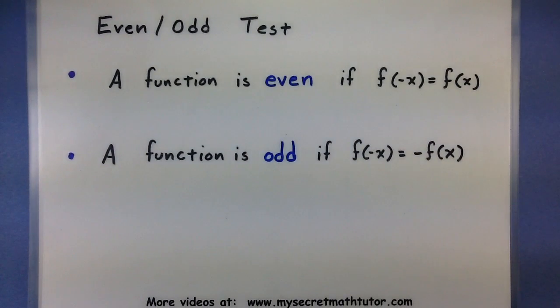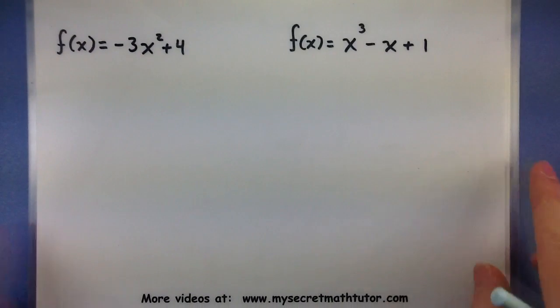So when we have the equation of a function, we want to substitute in a negative x, simplify it as much as possible to see if it satisfies one of these conditions. Let's grab some examples and give this a try. So in each of my examples, we want to determine is the function even, is it odd, or is it possibly neither? Let's start.